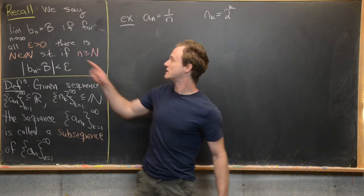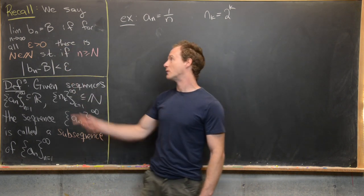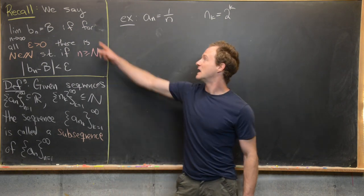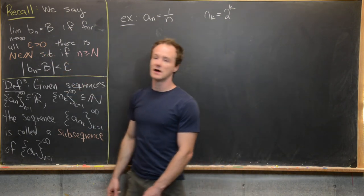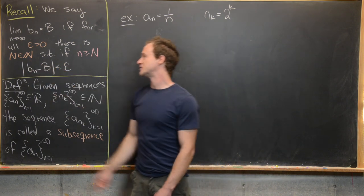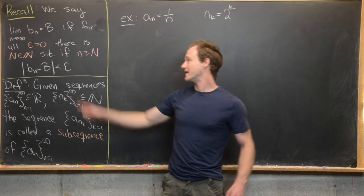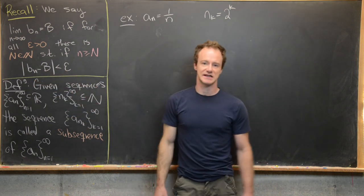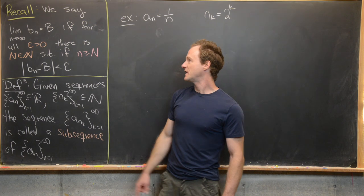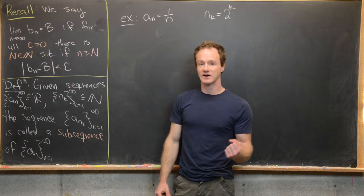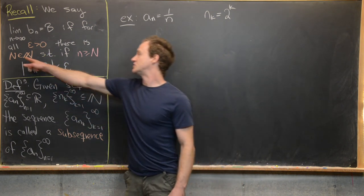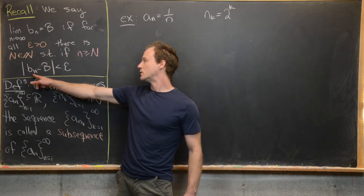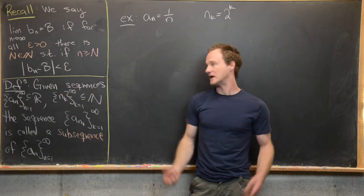We say that the sequence b_n has a limit of b, and we write it as the limit as n goes to infinity of b_n equals b, if for all epsilon greater than zero, there is an N which is a natural number, such that if little n is bigger than or equal to capital N, then |b_n - b| is less than epsilon. So epsilon is very, very small, but by choosing capital N as big as we need to, the values of the sequence are within epsilon of its limiting value.